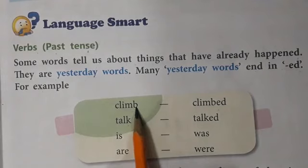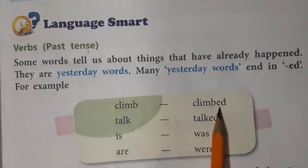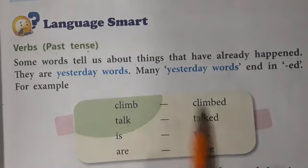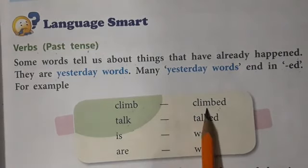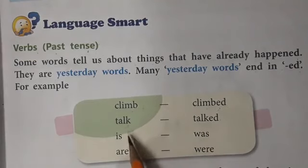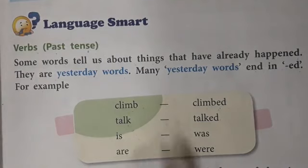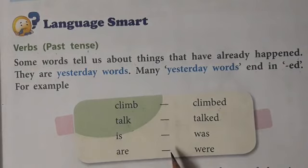For example, climb becomes climbed — we put ED and it changes to past. Climb means chadna, climbed means chadha. Also, is changes to was, and are changes to were. You have already learned the use of is, am, are, was, were in your grammar lectures. So you have to recall those points in your mind.